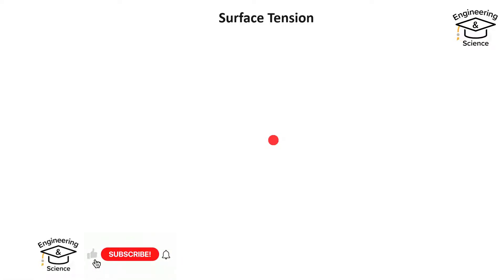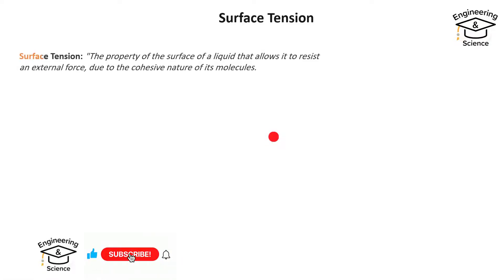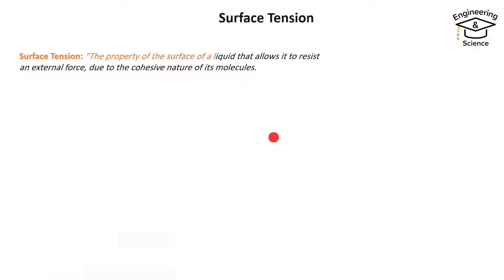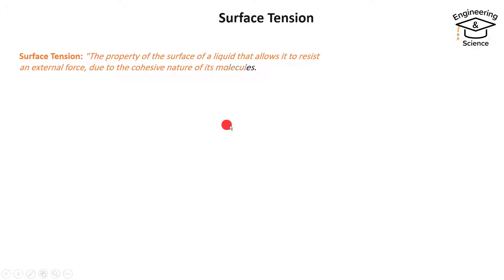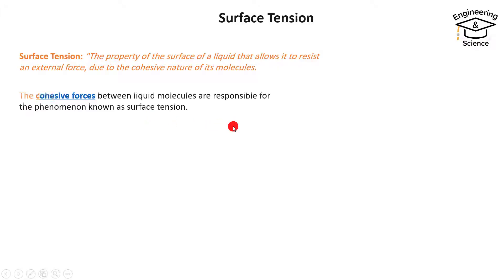Hello everyone. Today I want to explain what surface tension is. Surface tension is a property of the surface of a liquid that allows it to resist an external force due to the cohesive nature of its molecules.